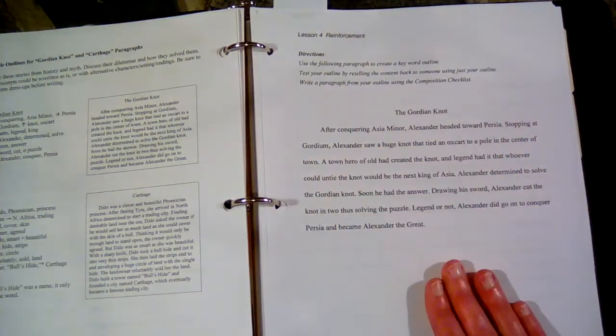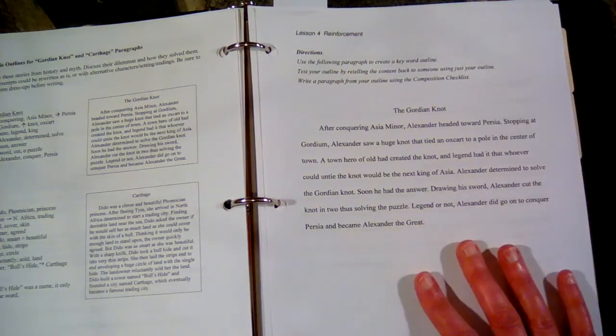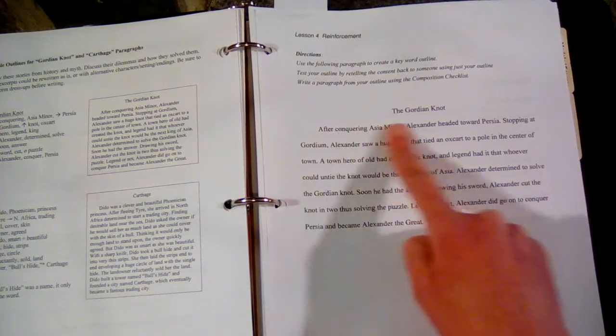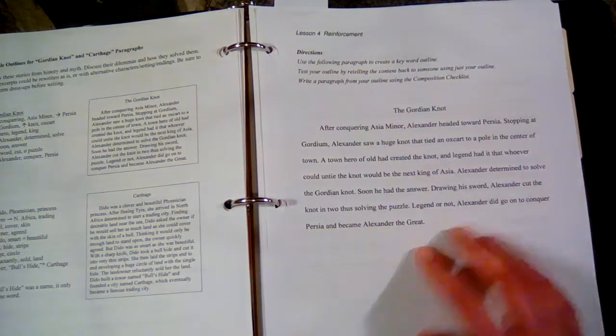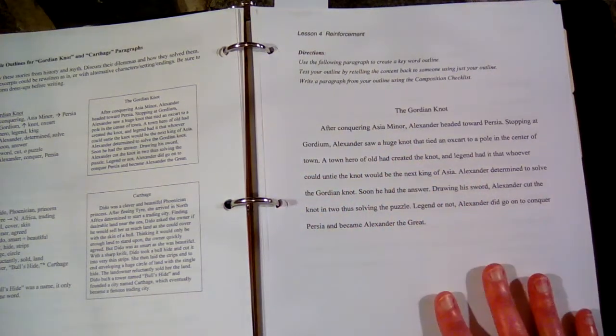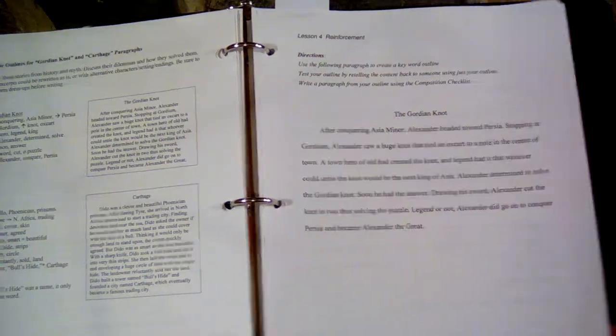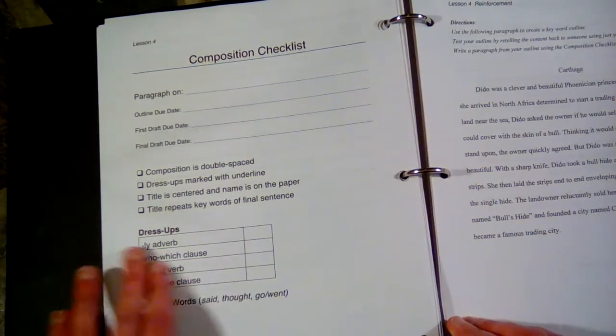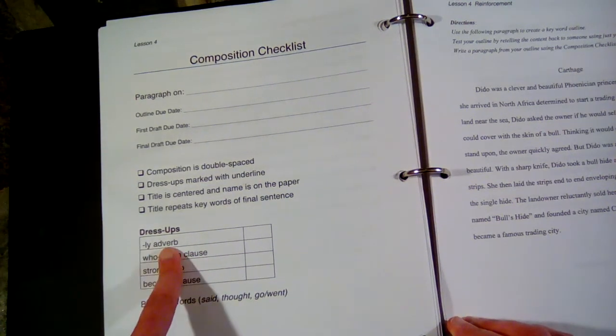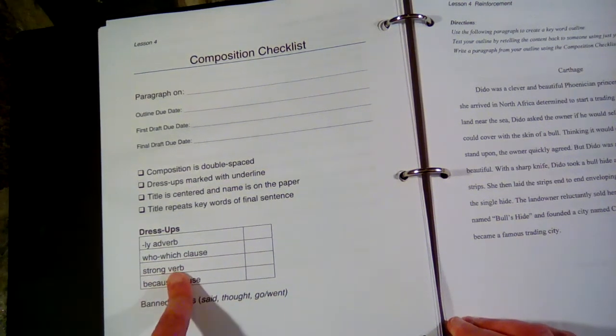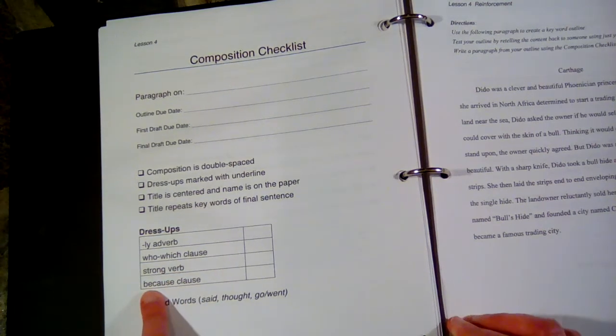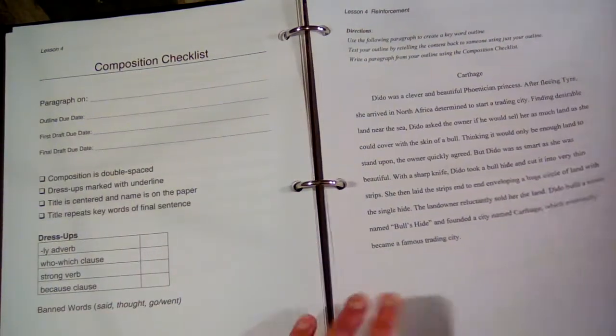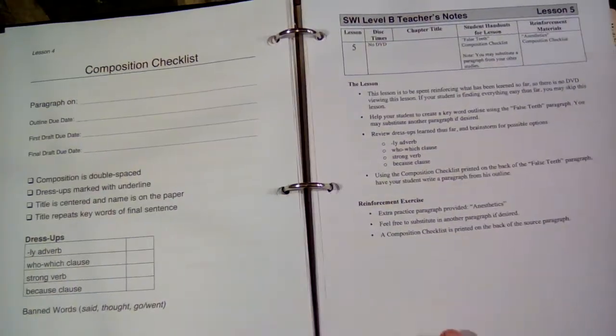So the student is going to continue rewriting paragraphs using a keyword outline. They get to choose three words out of every sentence for the whole paragraph, then take this away and rewrite the paragraph without looking at this in their own words. This is the checklist that they have to do and make sure all of these things are in their paragraph. They have to have an ly adverb, a who or which, a strong verb, and the word because, and then these words are banned.